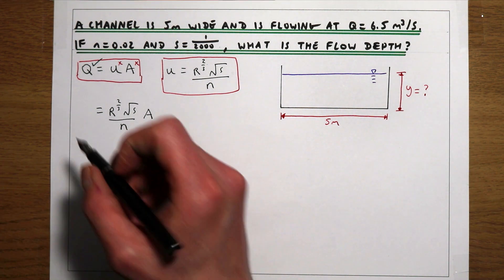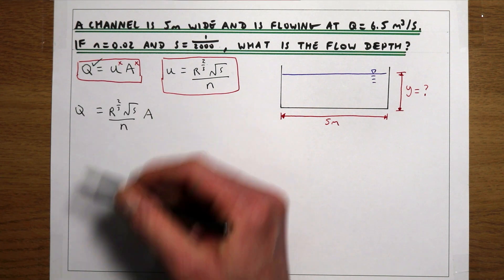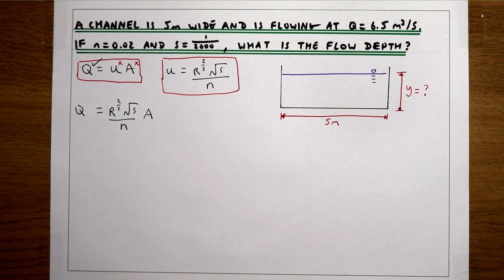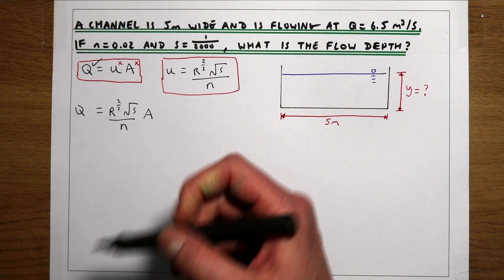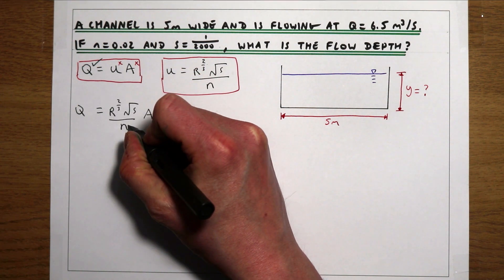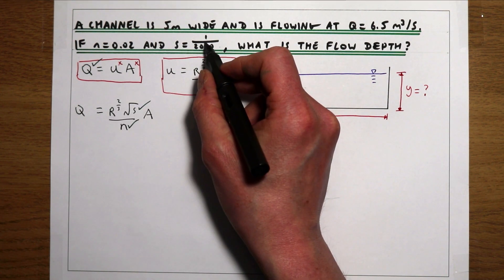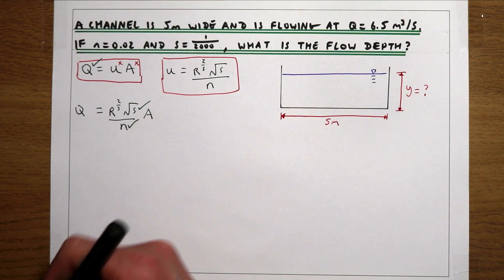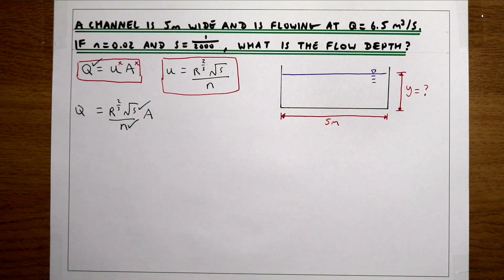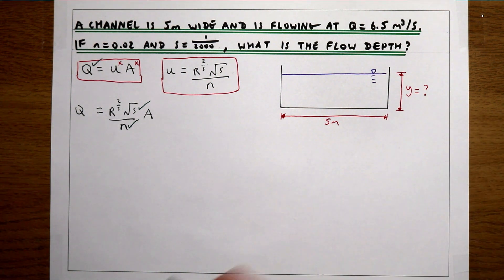So our flow rate is equal to all of these terms. We know N — we're given that in the question. We've got S — we're given that in the question. But the area is still unknown and the hydraulic radius is still unknown. So what we want to do is write this out in a way that our only unknown in the equation is Y.